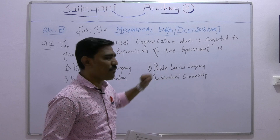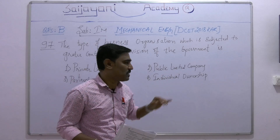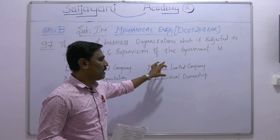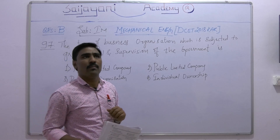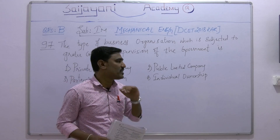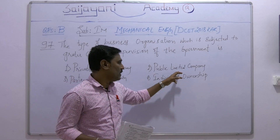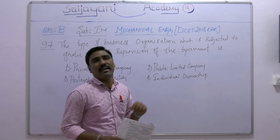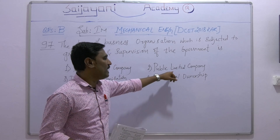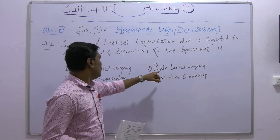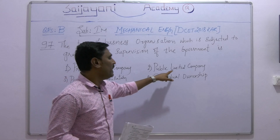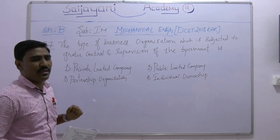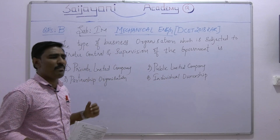Next is the public limited company. It consists of a limited number of members, around seven. There must be protection of the interests of the shareholders and the public, so a lot of care and supervision is needed in a public limited company.